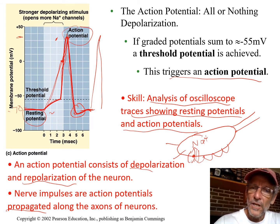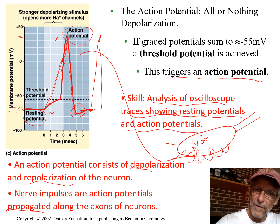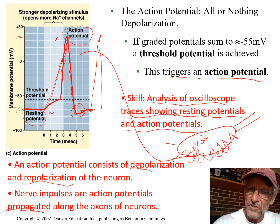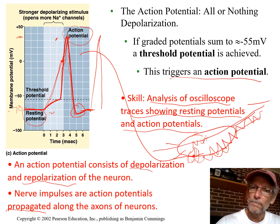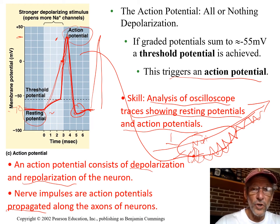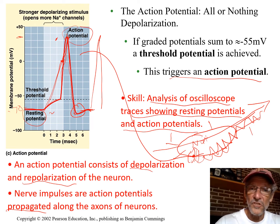If this action potential happens here — I'll put the spike like it is on the graph — in the cell, it causes it to happen next to it and then next to it. This spike always goes in the direction: dendrite → cell body → axon. It can actually start anywhere — in the dendrite, the cell body, or even the axon — but it's always going to travel in that direction.